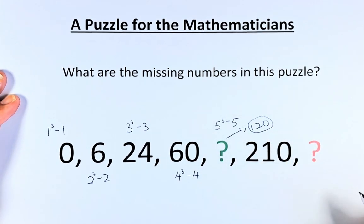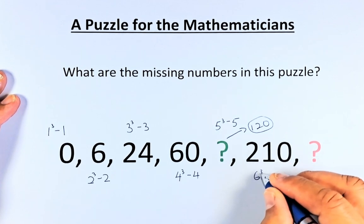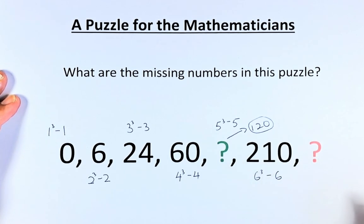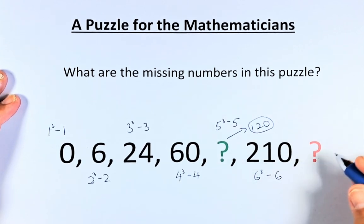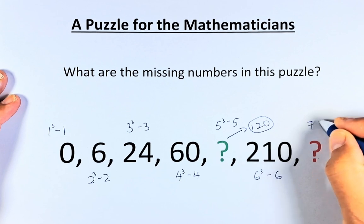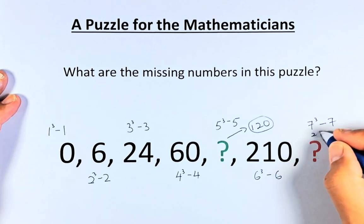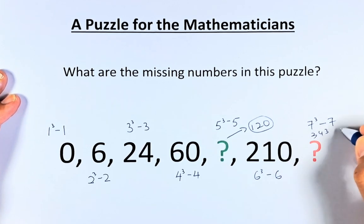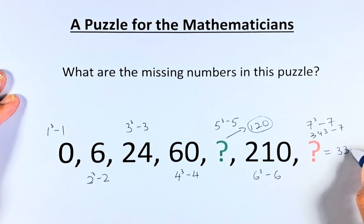Now we're going to do the next question mark, the red. 210 is going to be 6 cube minus 6. 6 cube is 216, 216 minus 6 is 210. Of course the red question mark is going to be 7 cube minus 7. If you are good in your mental calculation, 7 cube is 343 minus 7 and the question mark is going to be 336.